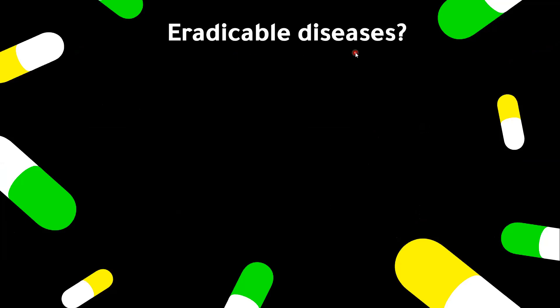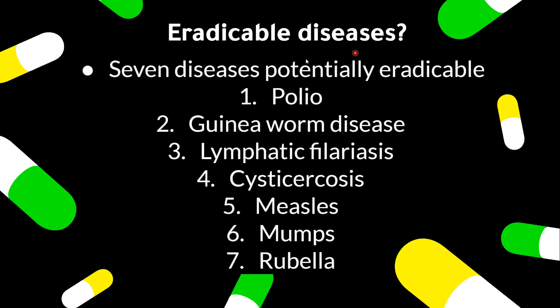There are seven diseases that can potentially be eradicated: polio, Guinea worm disease, lymphatic filariasis, cysticercosis, measles, mumps, and rubella. These are the seven diseases that are potentially eradicable.